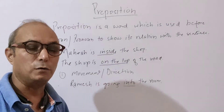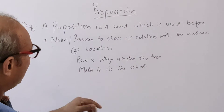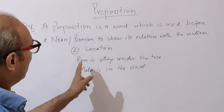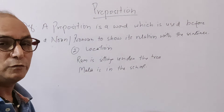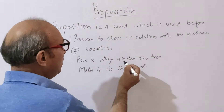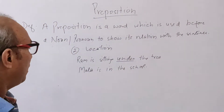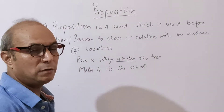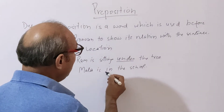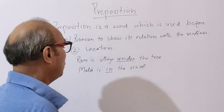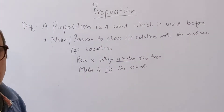He's walking on the road. Number two is location. For example: 'He is sitting under the tree' — this is the location example. He's sitting under the tree. She is in the school. Here, 'under' and 'in' are prepositions of location.